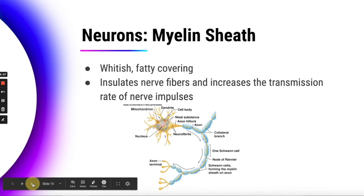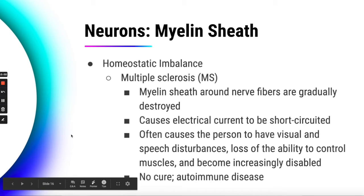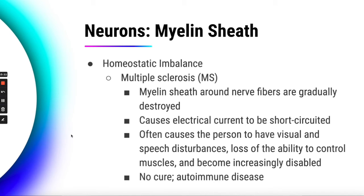One homeostatic imbalance involving the myelin sheath is multiple sclerosis, or MS. What happens is the myelin sheath around the nerve fibers is destroyed over time, causing those electrical signals traveling the length of the axon to be short-circuited. This causes visual problems — if the optic nerve is damaged going from eye to brain, it causes vision impairment — along with speech disturbances and loss of muscle control. The person becomes increasingly disabled over time. It is an autoimmune disease where, for unknown reasons, the immune system damages the myelin around the axons, and unfortunately there is no cure at this time.